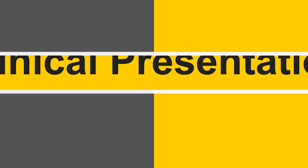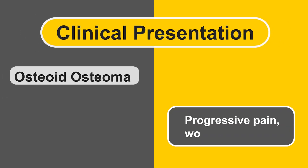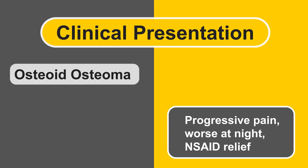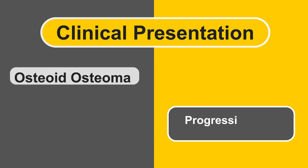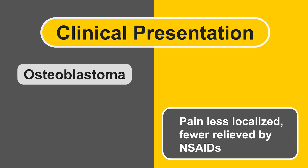Third feature: clinical presentation. Osteoid osteoma presents with progressive pain, worse at night, with relief from NSAIDs — medicines widely used to relieve pain and reduce inflammation. Osteoblastoma presents with pain that is less localized and less relieved by NSAIDs.